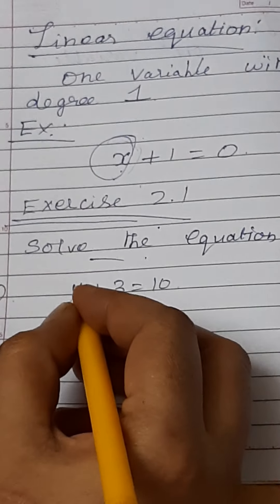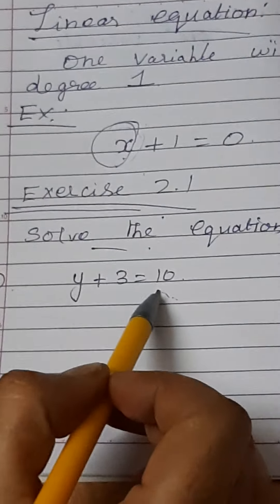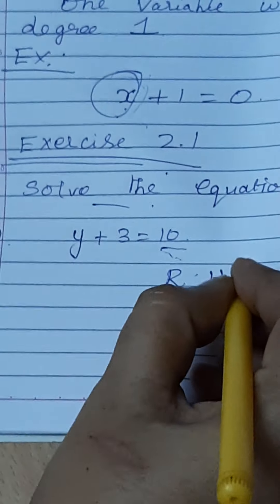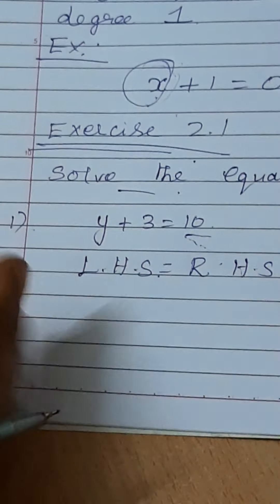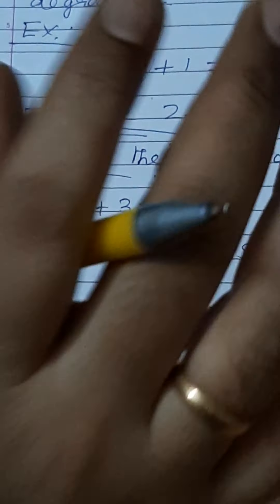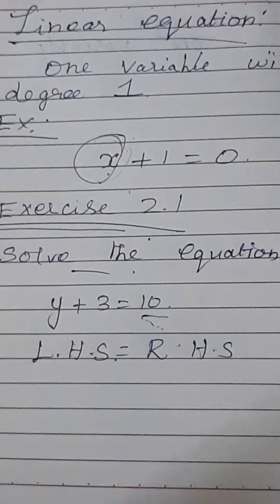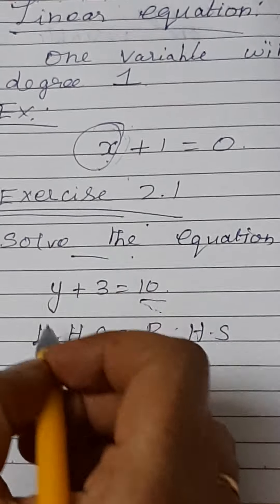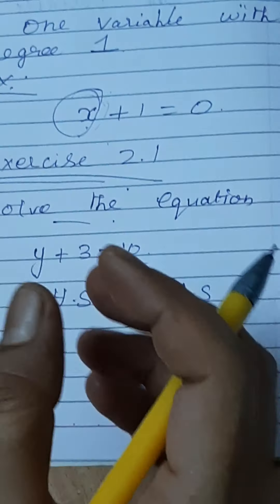Here, y plus 3 is on the left hand side, called LHS, and 10 is on the right hand side, called RHS. To find the value of y, we have to eliminate 3 from the left hand side.